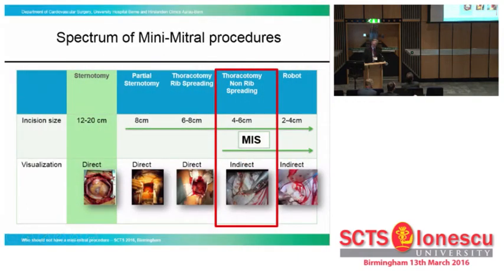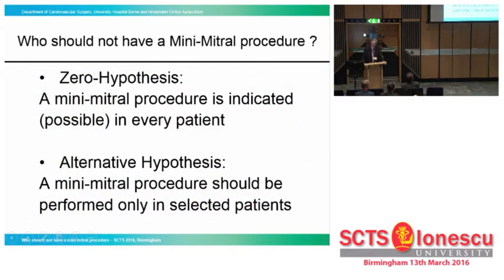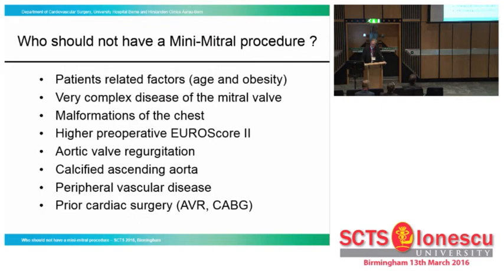I will focus on the thoracotomy non-rib-spreading procedure. One could go to the problem and ask the following question: the null hypothesis would be that the mini-mitral procedure is indicated and perhaps possible in every patient, while the alternative is that mini-mitral should be performed only in selected patients. And this will be the question: what is the definition of a selected patient?